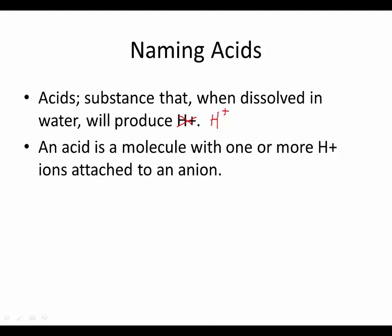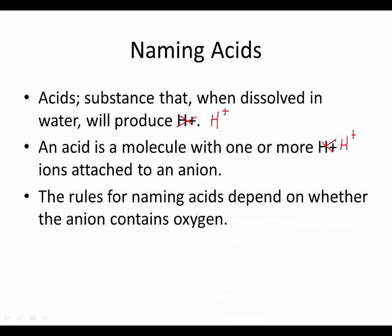So an acid is a molecule with one or more hydrogen ions attached. The rules for naming the acids depend on whether the anion contains oxygen or it doesn't. So there's going to be two types of acids: oxy acids and then just binary acids.